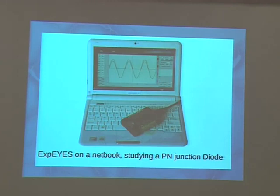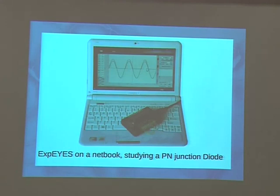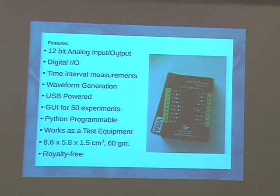Here you can see the small box — we are studying a diode rectifier. The specification includes 12-bit resolution. When dealing with 0 to 5 volt signals, 12-bit resolution means you are resolving around 1 to 1.2 millivolts, and that is good enough for most of the experiments.